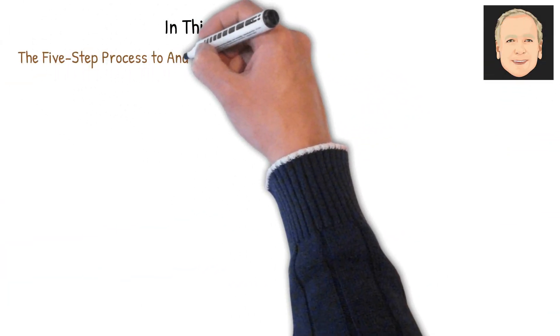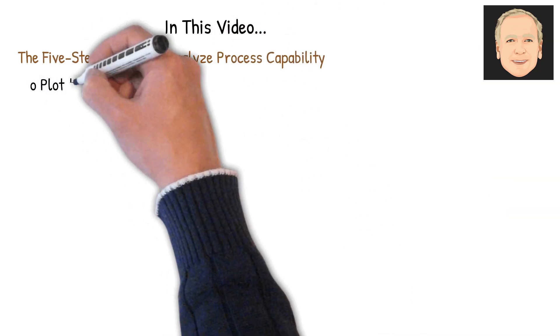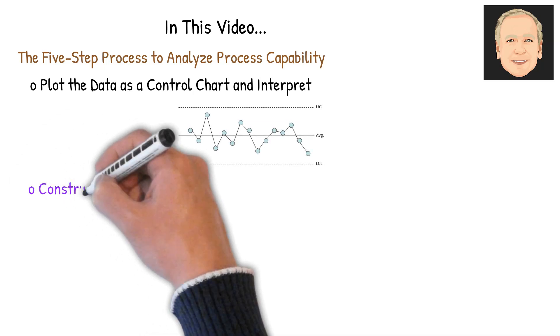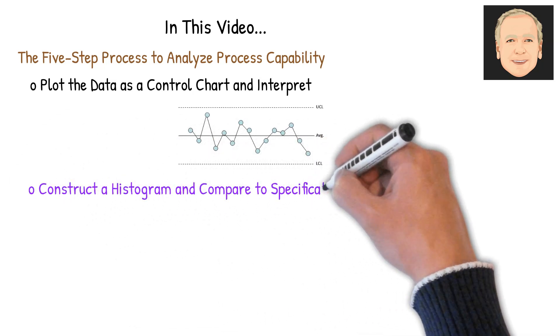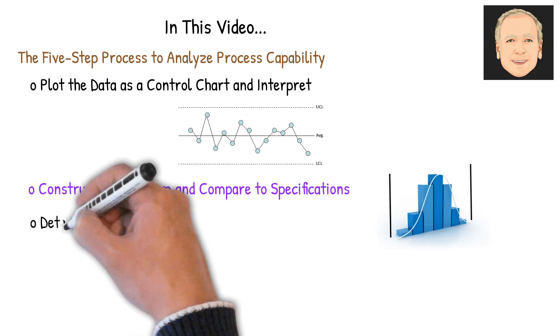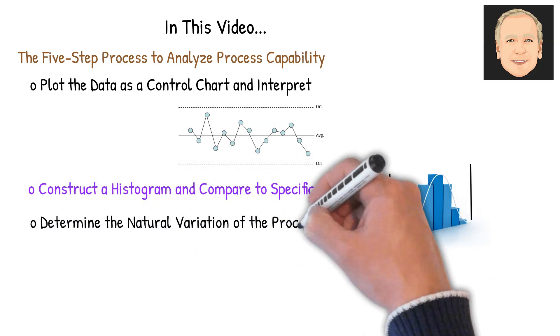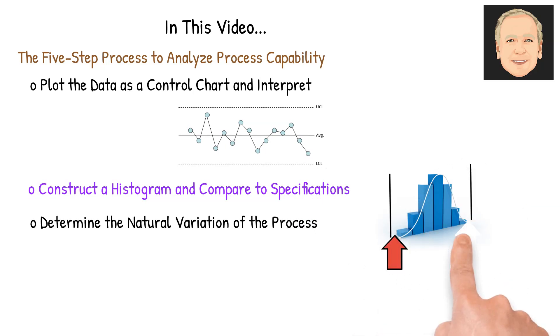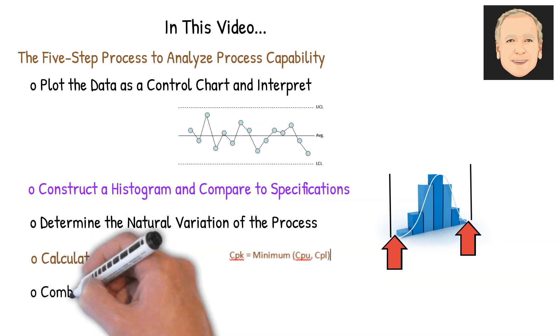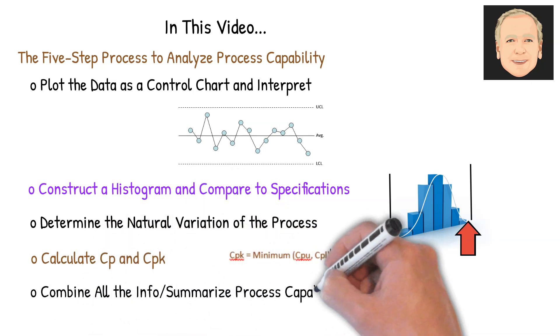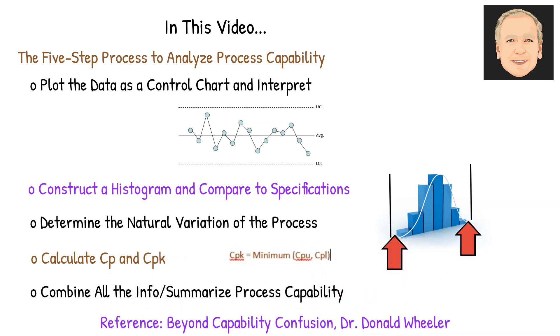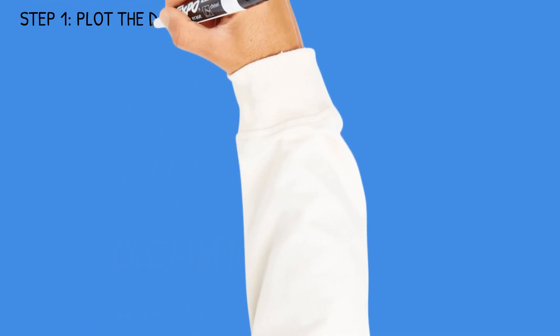In this video we're going to look at a five-step process to analyze process capability. We're going to plot the data as a control chart and interpret it. We want it to be in statistical control. Then we'll construct a histogram and compare that to specifications. Then we're going to determine the natural variation of the process. Then we're going to calculate CP and CPK. Then we're going to combine all the information to summarize process capability. Dr. Donald Wheeler's book Beyond Capability Confusion is a reference for this video.